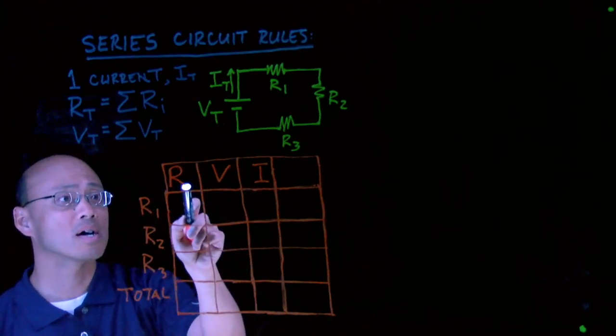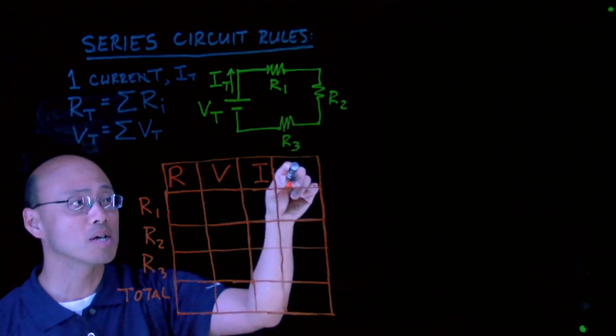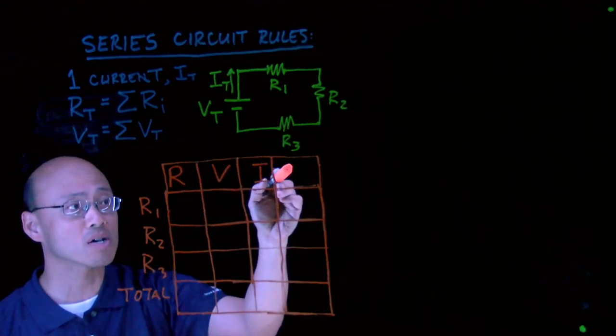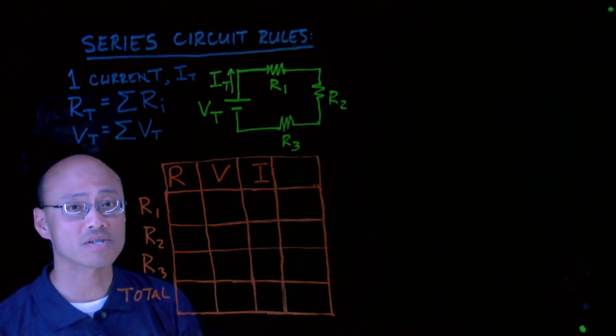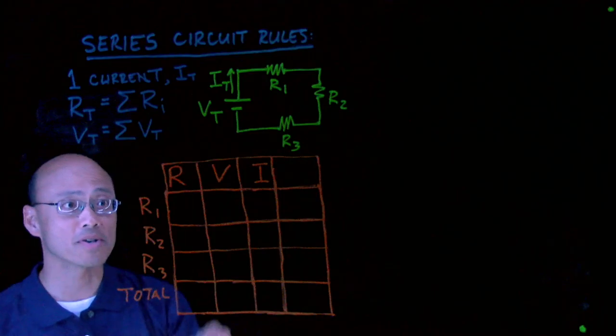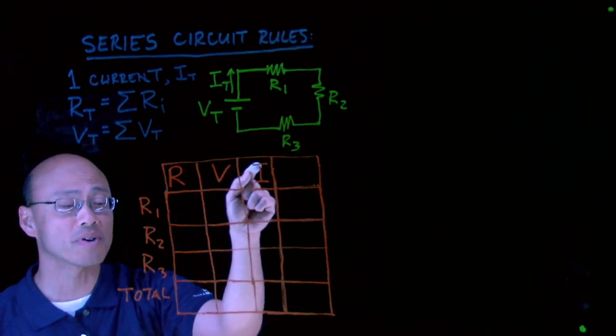You'll notice that I've started with a four column table. I'm going to leave that one blank for now. We'll talk about what we're going to use this column for later. I'm going to concentrate on R, V, and I because you should recognize that as Ohm's law, right? Resistance equals voltage divided by current.